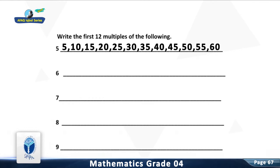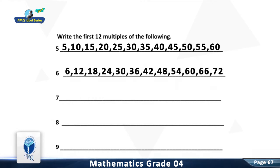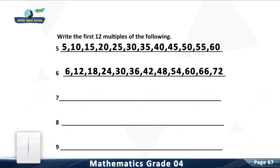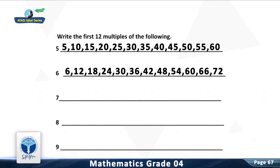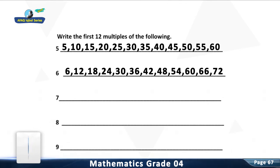Question 6: Write the first 12 multiples of 6. The first 12 multiples of 6 are 6, 12, 18, 24, 30, 36, 42, 48, 54, 60, 66, and 72.